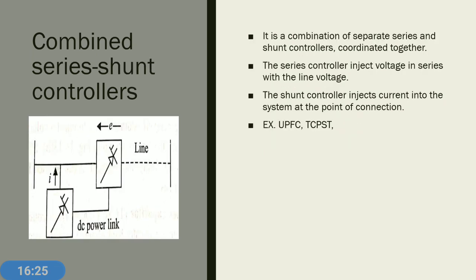The last type is the combined series-shunt controller, which combines a shunt controller injecting current and a series controller injecting voltage, working in a coordinated manner to control transmission line parameters. The series controller injects voltage in series with the line and the shunt controller injects current into the system at the point of interconnection. Examples include UPFC (Unified Power Flow Controller) and TCPST (Thyristor Controlled Phase Shifting Transformer).